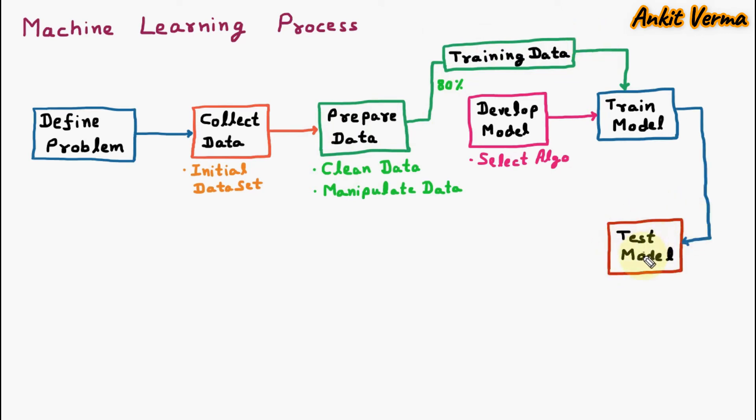Next thing is test model. Once our model is properly trained, then afterward we are going to test the model. Out of the prepared data, 80% is training data and the remaining 20% of data is test data. This test data, which is 20% of the prepared data, is used for testing the model. This test data is also called test set or test data set.